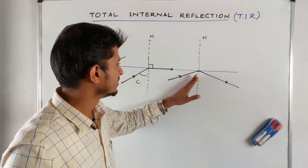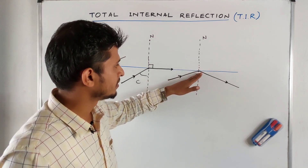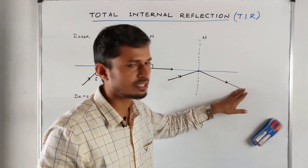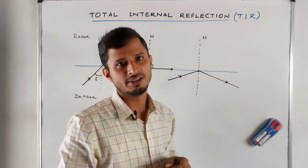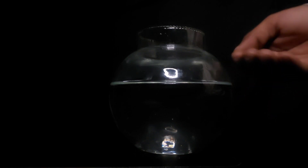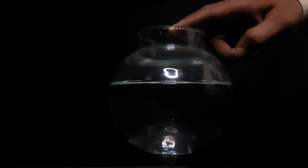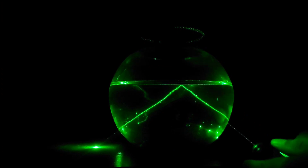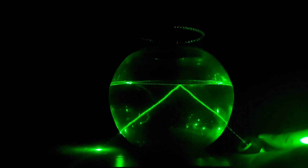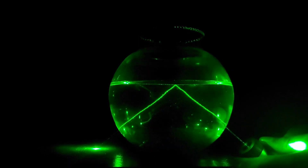In the third case, the angle of incidence is greater than the critical angle. In this situation, the ray comes back to the same medium. This phenomenon is called total internal reflection or TIR. A bowl containing half water — water is the denser medium and air above is the rarer medium. The ray of light inside the water returns to the same medium, which is the phenomenon of total internal reflection.